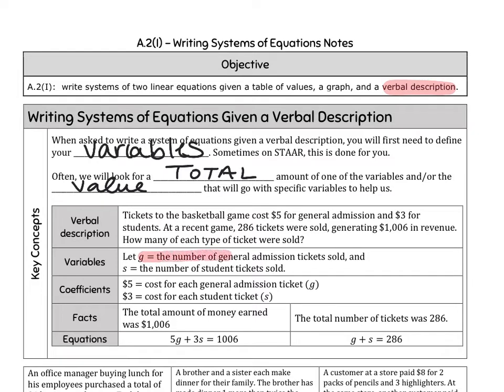It says let g be the number of general admission tickets sold. So g is for general admission. Does that make sense to pick the letter g for general admission? Yeah. And then we're going to pick s for the number of student tickets sold. So general admission is g, student tickets is s. Instead of using x's and y's, we're using g's and s's.